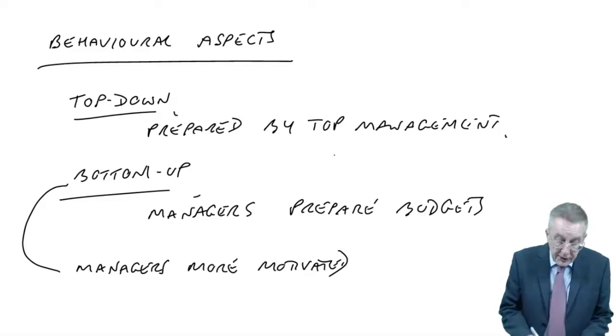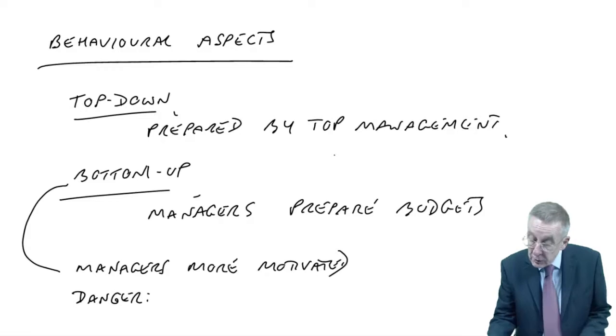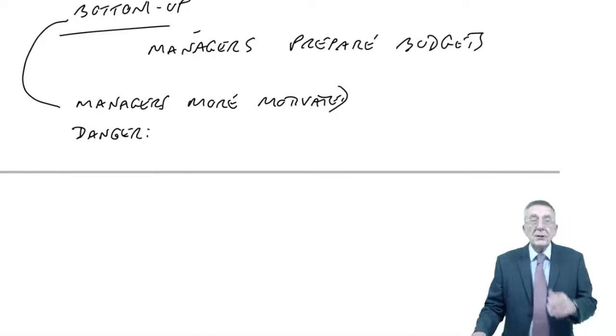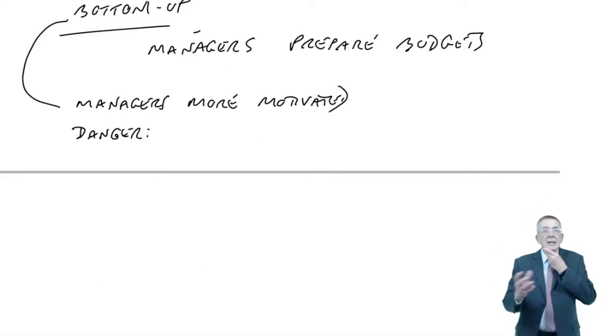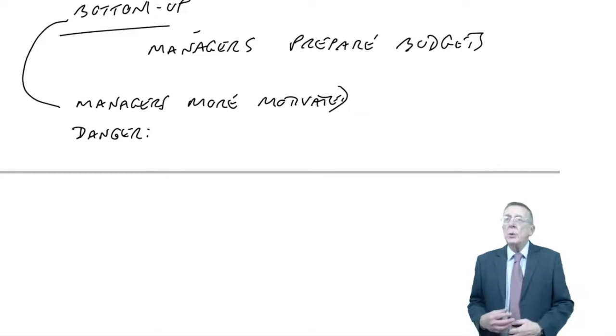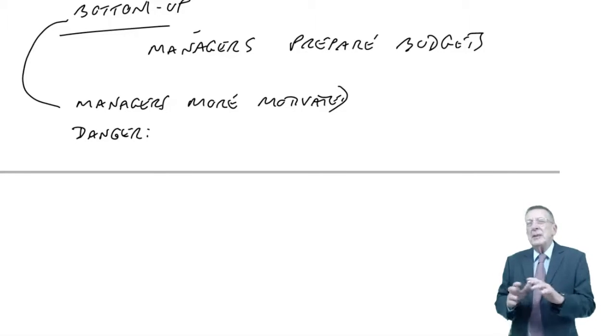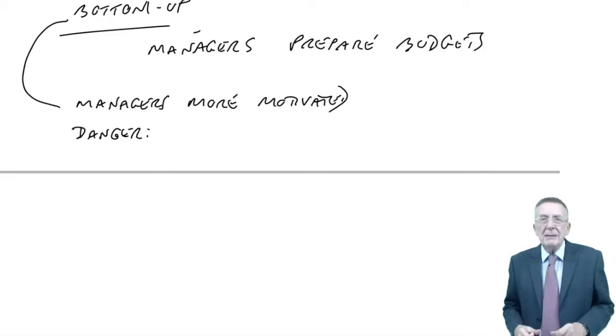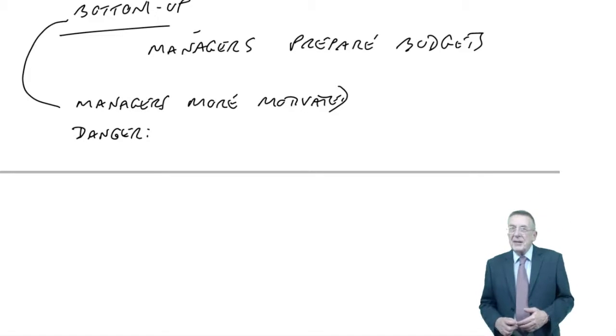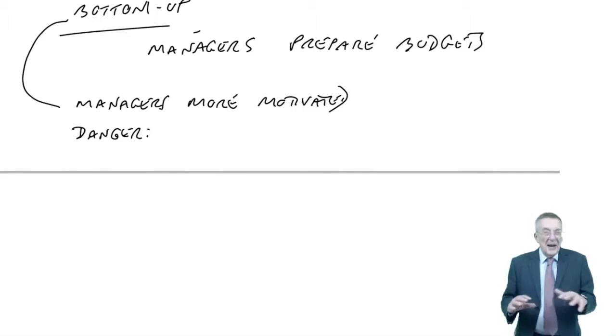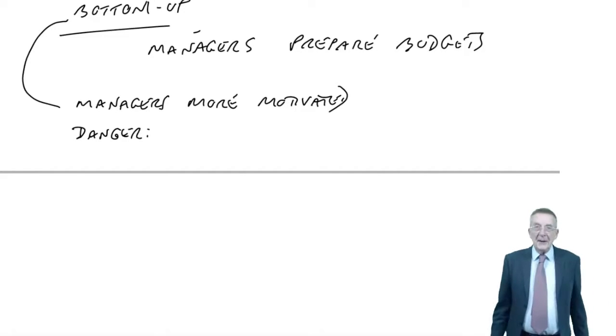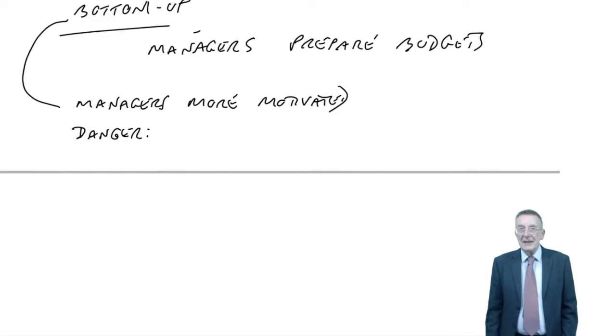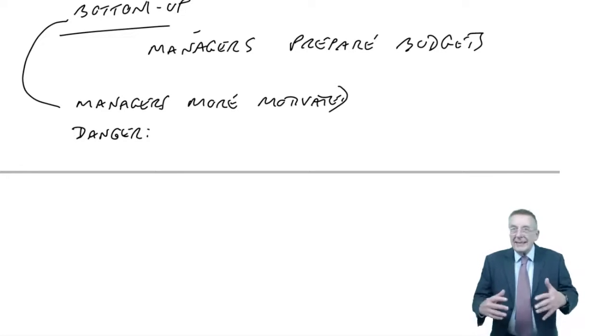However, the danger with bottom-up is because managers aren't stupid. They know you're being measured on how well you perform against budgets. So you may say, I'm doing a materials budget, I think we need $10,000, I'll put in the budget $11,000. Because if top management accept $11,000, then I know I'll definitely do better and get my bonus.